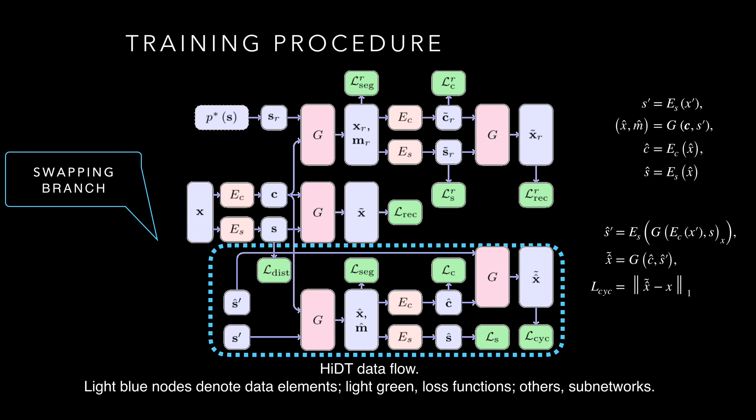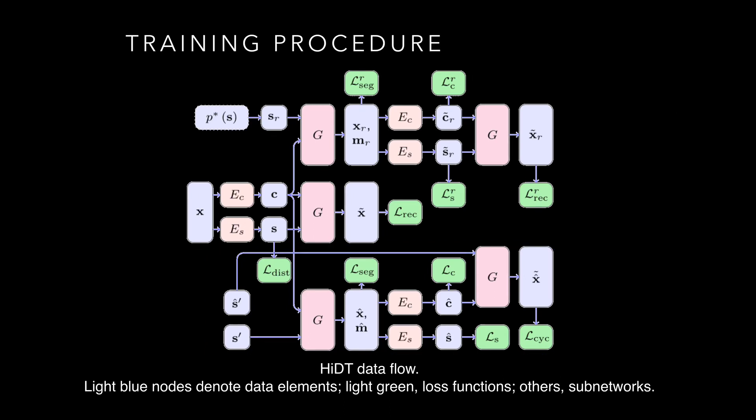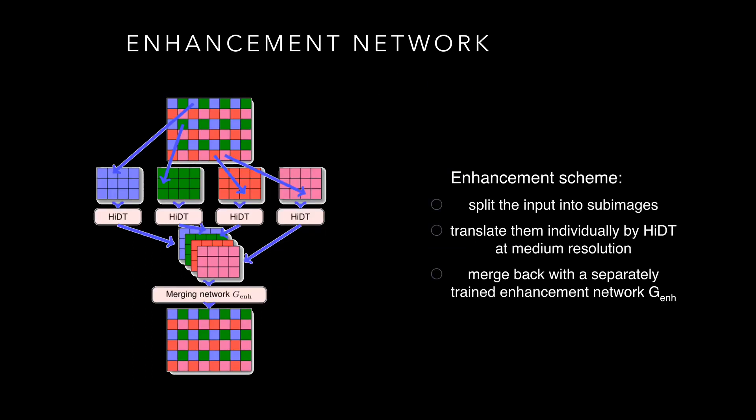To avoid the style encoder collapsing to a constant output, we apply a more robust objective than common L1 distance. During training, we also use two discriminators: a general and a conditional one. To further improve the generated images, we use a separate enhancement network whose architecture is inspired by ESRGAN and Pix2PixHD.